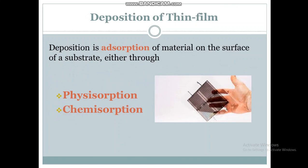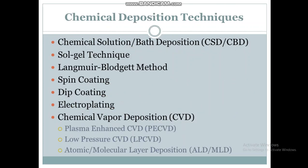Deposition of thin film is adsorption of material on the surface of a substrate. It can be processed either by physisorption — that is physical techniques — or chemisorption — that is chemical techniques. Chemical deposition techniques include chemical solution deposition, chemical bath deposition, sol-gel technique, Langmuir-Blodgett method, spin coating method, chemical vapor deposition, plasma enhanced chemical vapor deposition, low pressure chemical vapor deposition, and atomic and molecular layer deposition.